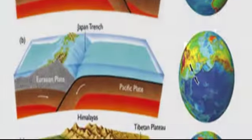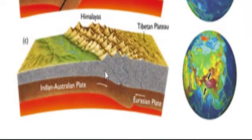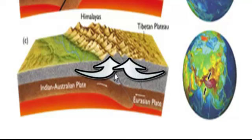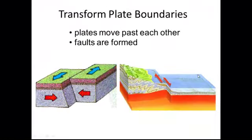Finally, if we have two continental crusts coming together, they'll crash into each other. Not much subduction is going to happen. They'll be pushed upward because they're less dense than the asthenosphere in the mantle, so they're not going to go down. They're going to get pushed up and create mountains — most notably the Himalayan mountains and Mount Everest, which are the tallest ones in the world.